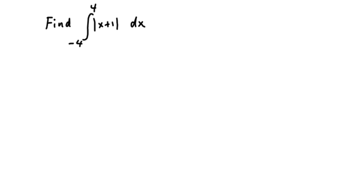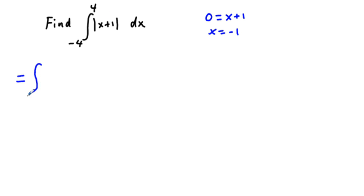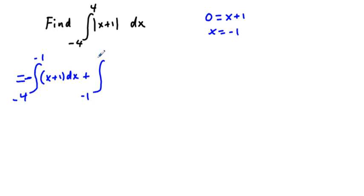First, we find the zero of this function by setting 0 equals x plus 1, which gives x equals negative 1. So the integral equals the integral from negative 4 to negative 1 — with a negative sign since this is to the left of negative 1 — of quantity x plus 1 dx, plus the integral from negative 1 to 4 of x plus 1 dx.